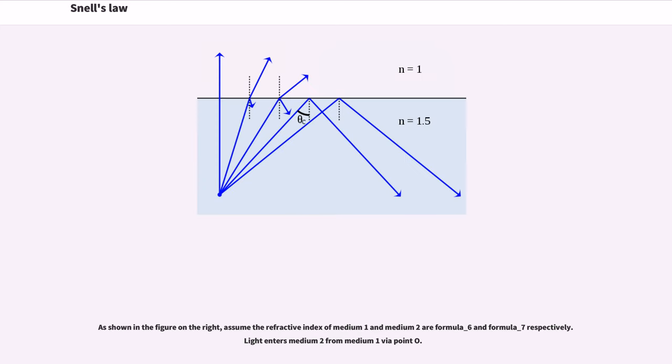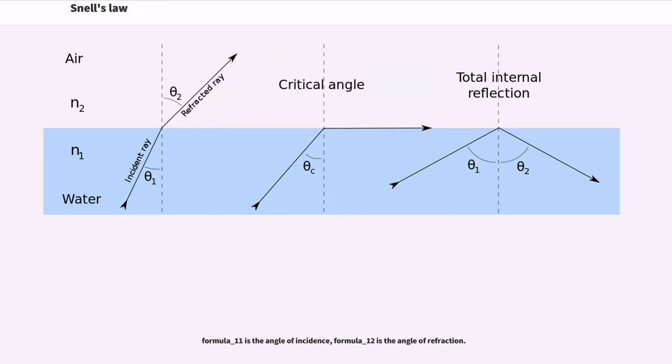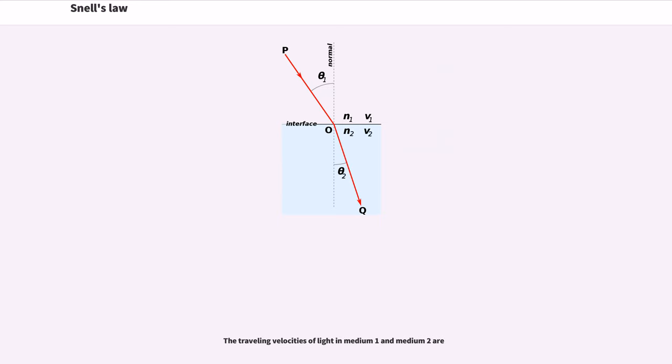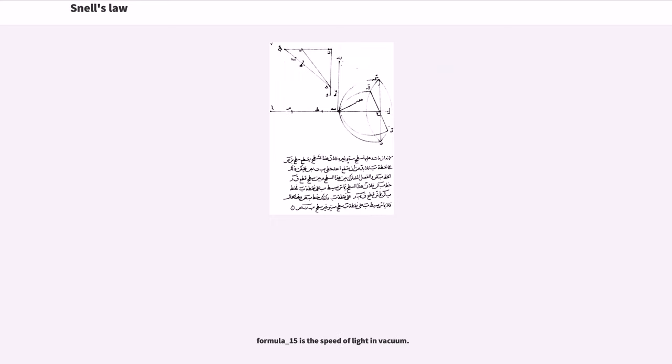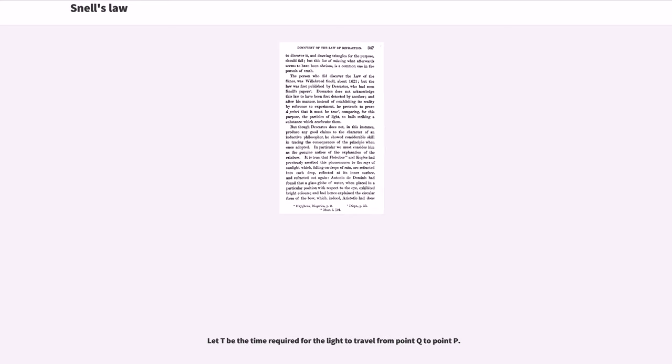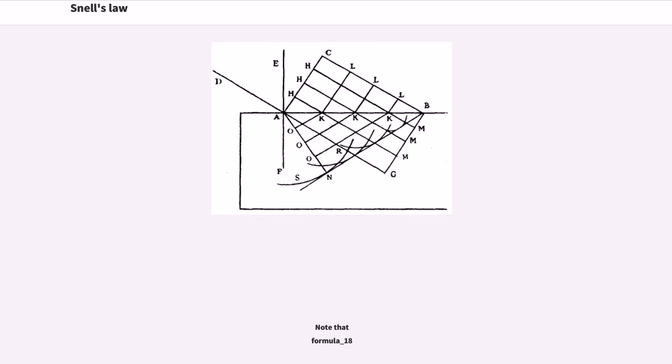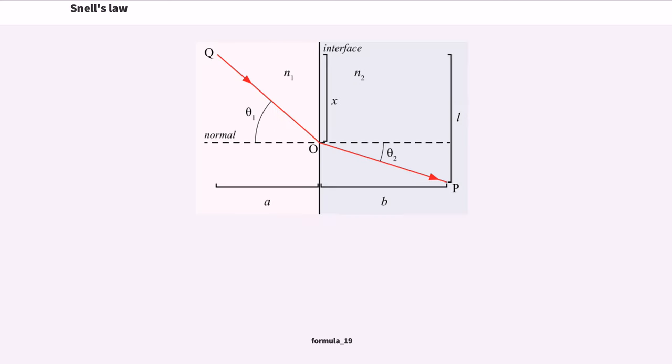As shown in the figure on the right, assume the refractive index of medium 1 and medium 2 are formula underscore 6 and formula underscore 7 respectively. Light enters medium 2 from medium 1 via point O. So, formula underscore 11 is the angle of incidence, formula underscore 12 is the angle of refraction. The traveling velocities of light in medium 1 and medium 2 are given, with formula underscore 15 as the speed of light in vacuum. Let T be the time required for the light to travel from point Q to point P. Note that formula underscore 18, formula underscore 19.